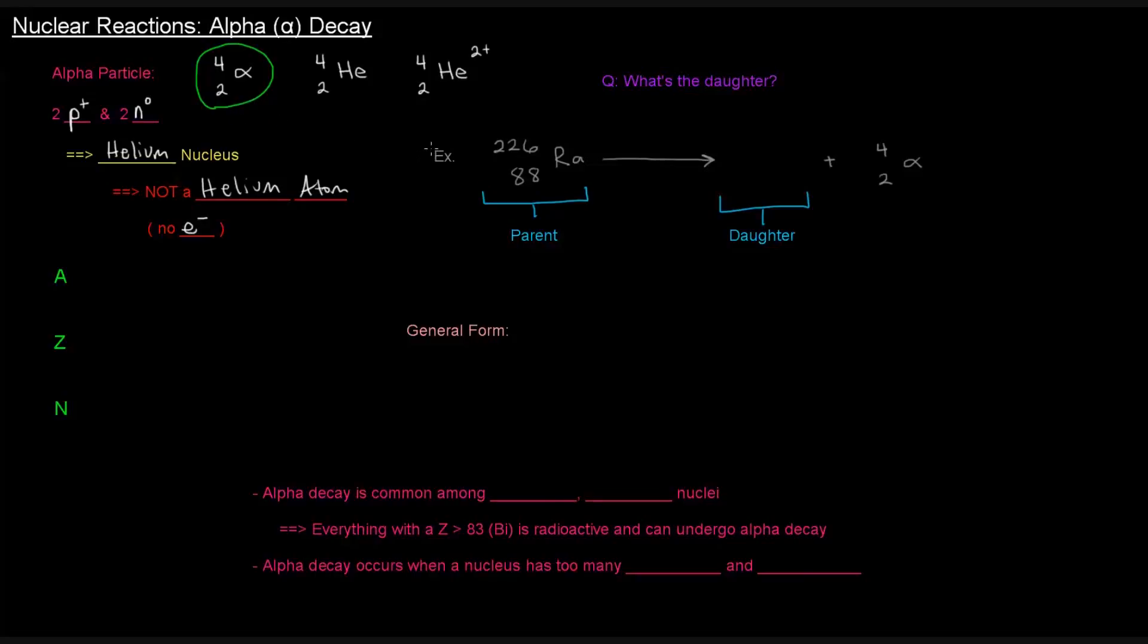Let's do an example of alpha decay. Here we're going to start with radium, mass number of 226, and an atomic number of 88. First thing we should do is calculate the number of neutrons based on this. If the mass number is equal to the number of protons plus the number of neutrons, and Z, the atomic number, is equal to the number of protons, we can just take 226 minus 88 to get the number of neutrons. If we do that, we'll get 138 neutrons.